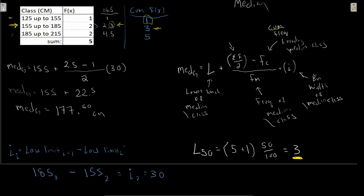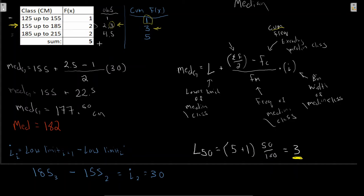Comparing this to what we calculated as our median from raw data - we got a median of 182. Again, just like all our grouped examples, we're a little bit off. We don't get a perfect estimate. Raw data will always be the better tool, but we can get a reasonable estimate of the grouped median. Group data analysis is an important skill when reading reports and trying to understand what's happening with the data - and this should wrap up our descriptive statistics for this week.